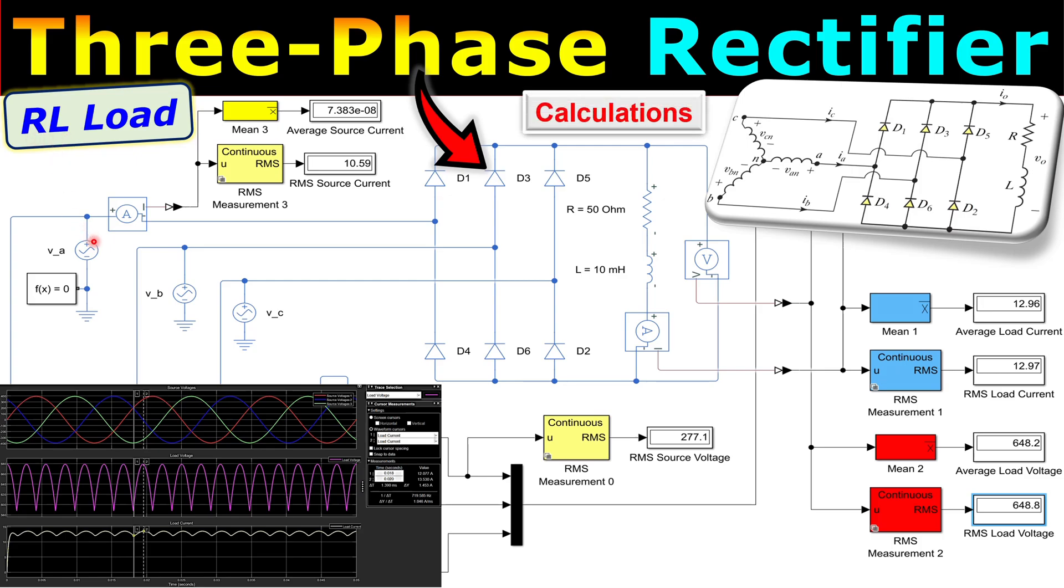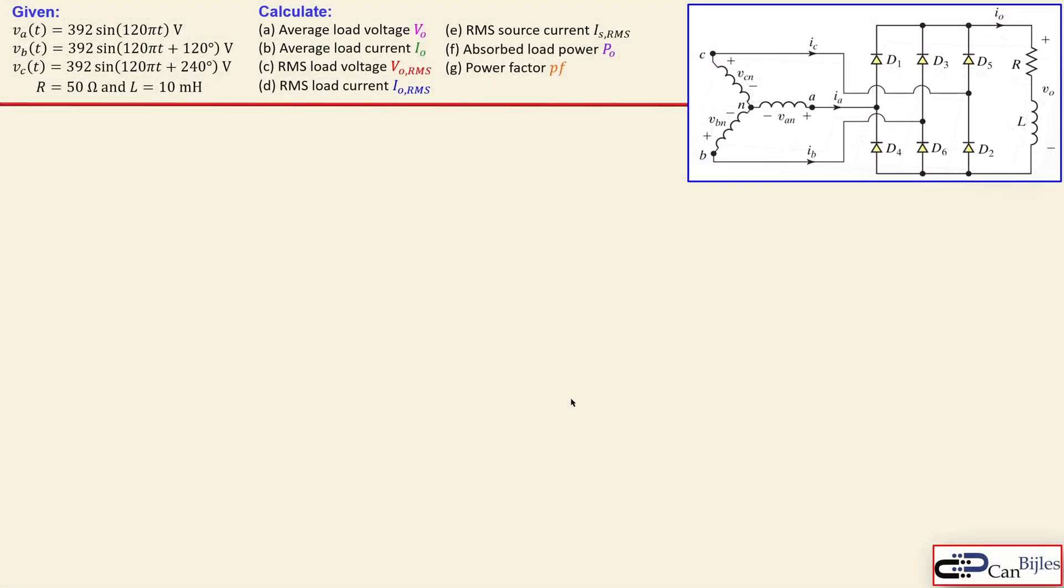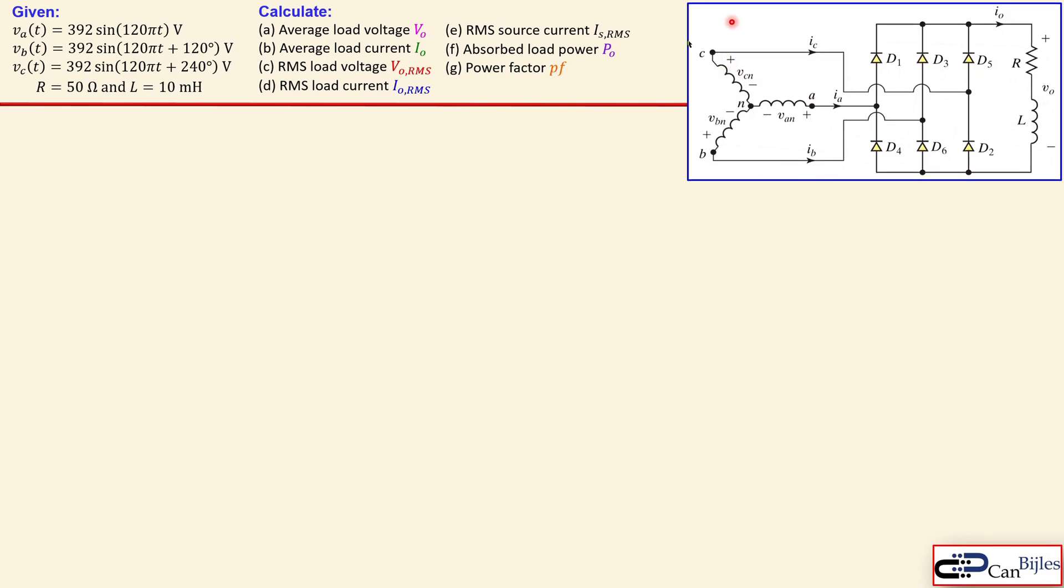Of course, we will see that step-by-step in our calculations and verify everything in the MATLAB Simulink simulations. Okay, this is our star connected source again. The balancers are shown here and here we have the resistor and the inductor in series and also the values are shown here. This is the same resistor value as we have seen in the previous example of the three-phase rectifier. Now we have added the inductor of 10 millihenries. And we have again our six diode configuration for our full wave three-phase rectification.